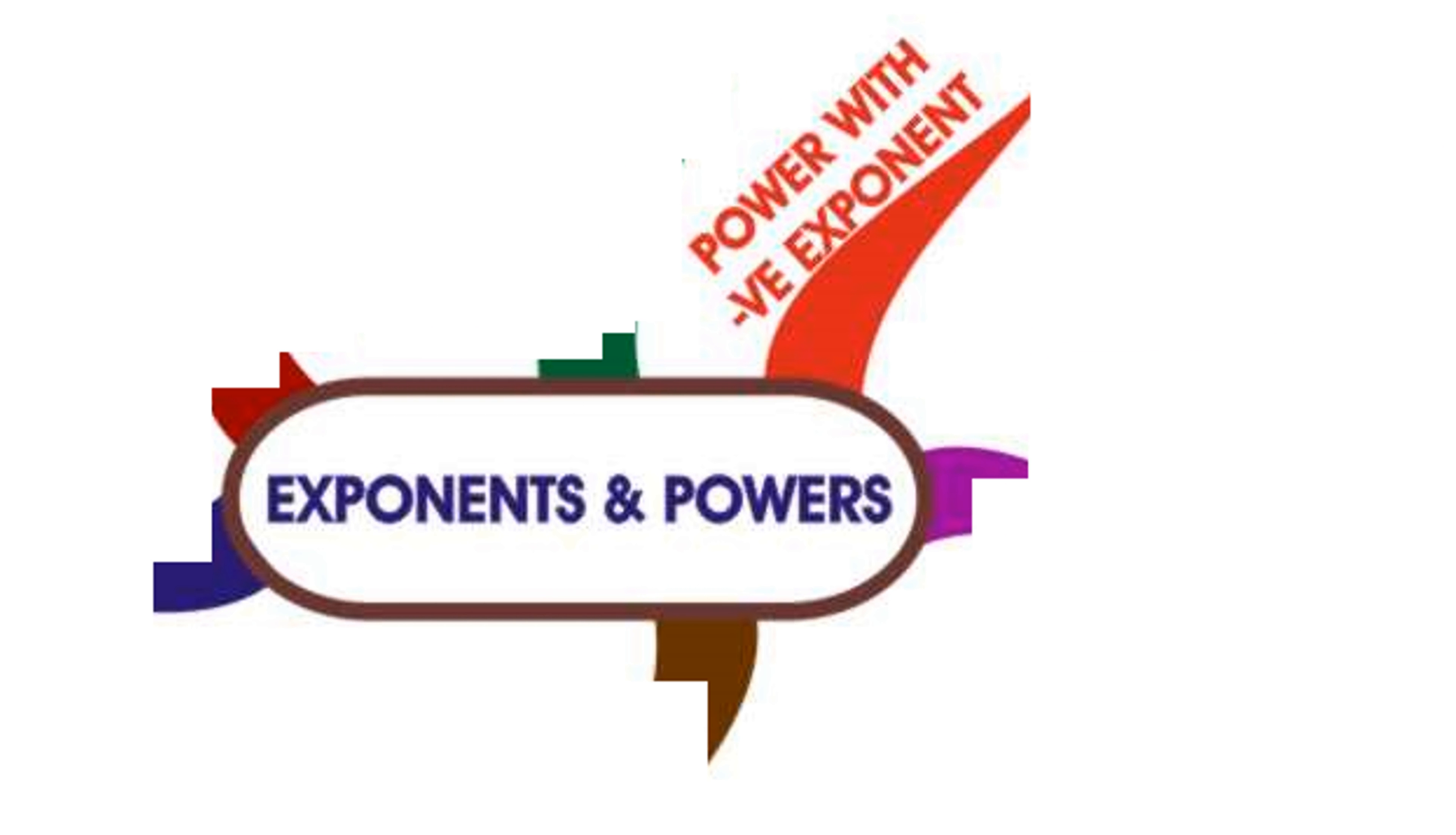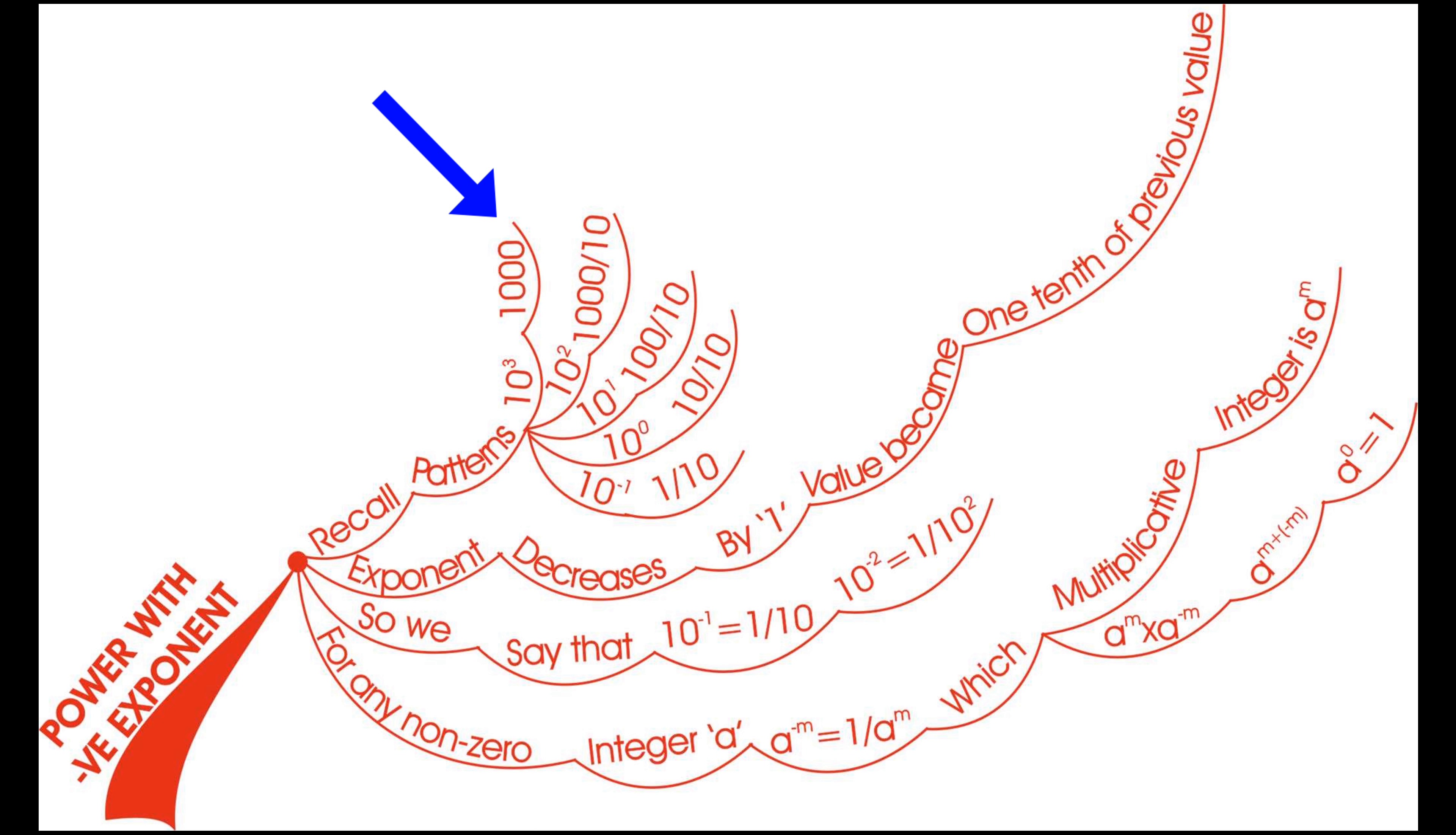Let us see our second branch. It is about powers with negative exponents. Let us recall some patterns.